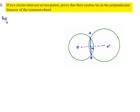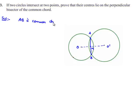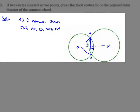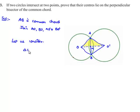We have considered two circles with centers O and O', and AB is a common chord for both the circles. We need to prove that the line joining the centers, OO', is the perpendicular bisector of AB. Let us join AO, BO, AO', and BO'.